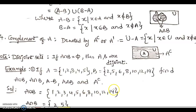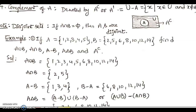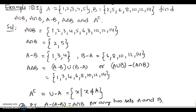Now let me explain an example to calculate union, intersection, difference, and complement of sets. Suppose set A has the elements 1, 2, 3, 4, 5 and set B has the elements 2, 5, 6, 8, 10, 12, 14. The problem is to calculate A union B, A intersection B, difference of A and B, symmetric difference of A and B, and complement of A. Coming to A union B, it is the collection of elements which belong to both A and B, discarding duplicates. So A union B equals {1, 2, 3, 4, 5, 6, 8, 10, 12, 14}.